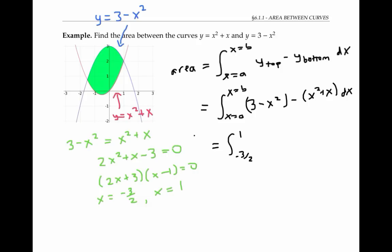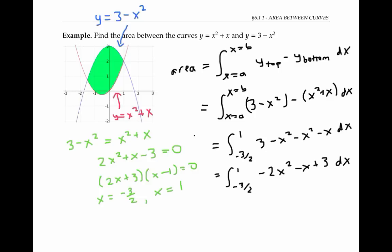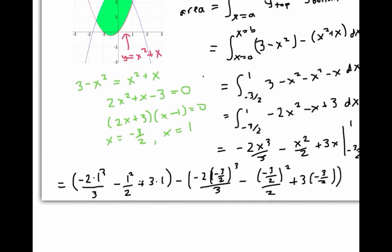We can simplify the integrand: three minus x squared minus x squared minus x, which gives the integral from negative three halves to one of negative two x squared minus x plus three dx. Evaluating, this gives negative two x cubed over three minus x squared over two plus three x, evaluated between one and negative three halves. Plugging in the bounds and simplifying gives 125 over 24 as the area.